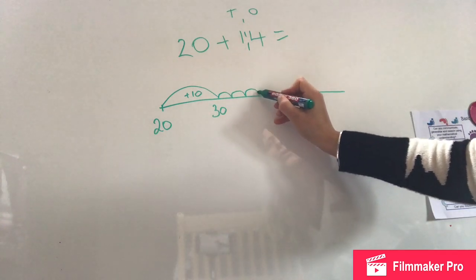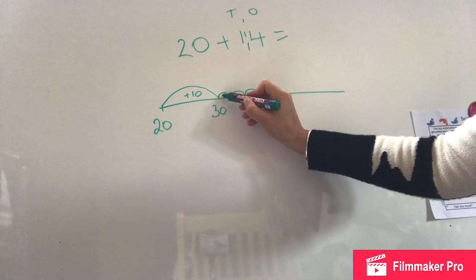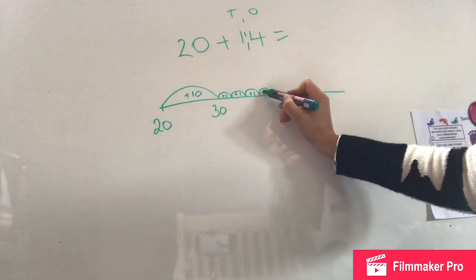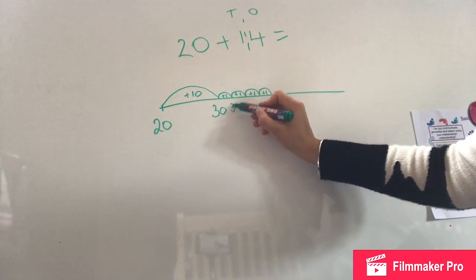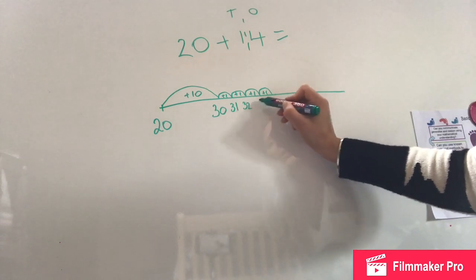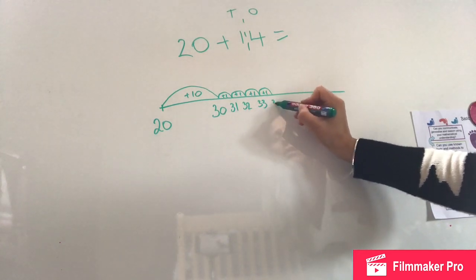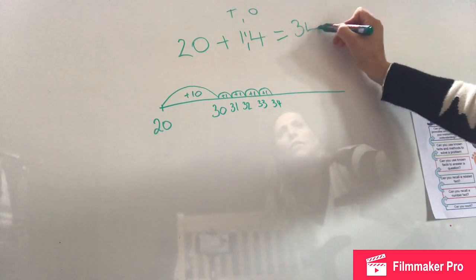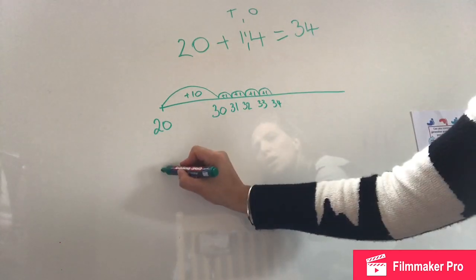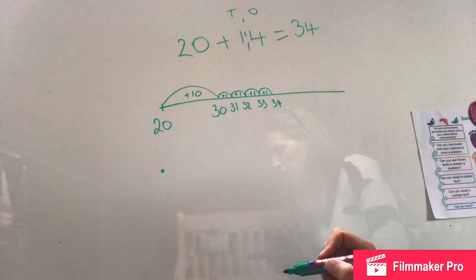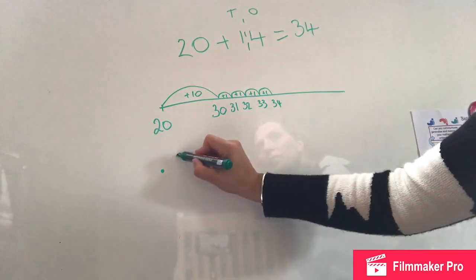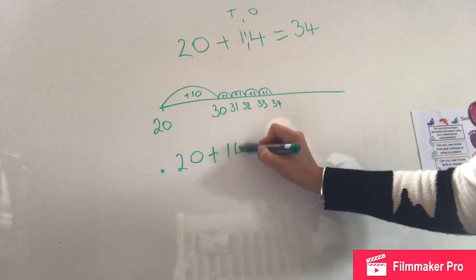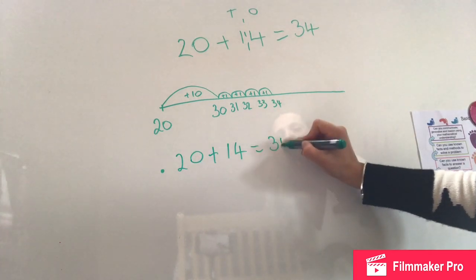I'm going to add on one ten, which is going to give me 30, because 20 add 10 is 30. Then I'm going to add on four ones — 1, 2, 3, 4 — so 31, 32, 33, 34. So my answer is 34. So I've got my first number sentence in my fact family: 20 add 14 equals 34.